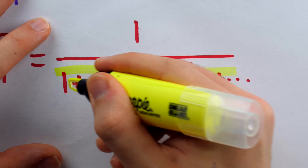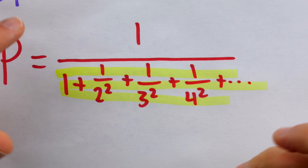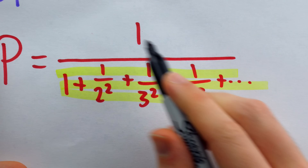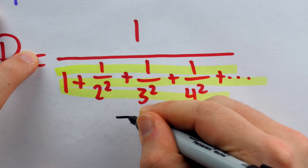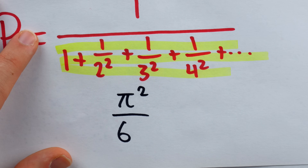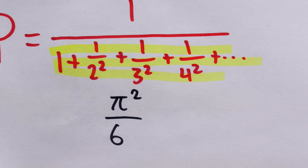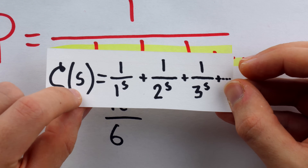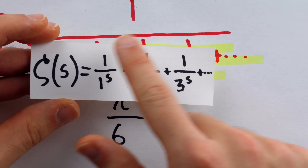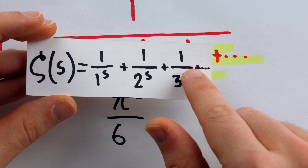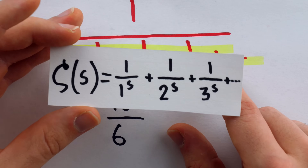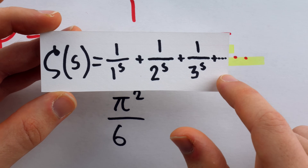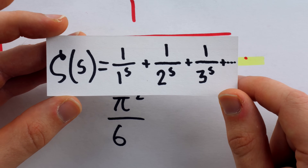Thankfully, we don't have to evaluate this sum ourselves, because Leonard Euler already did it. At the spry age of 28 in 1734, Euler showed that the series 1 + 1/2² + 1/3² + ... is actually equal to π² divided by 6. This is in fact just one value of what later came to be known as the Riemann zeta function: ζ(s) = 1/1^s + 1/2^s + 1/3^s + ..., evaluated at s = 2. This function is central to the most significant unsolved problem in mathematics today — the Riemann hypothesis.